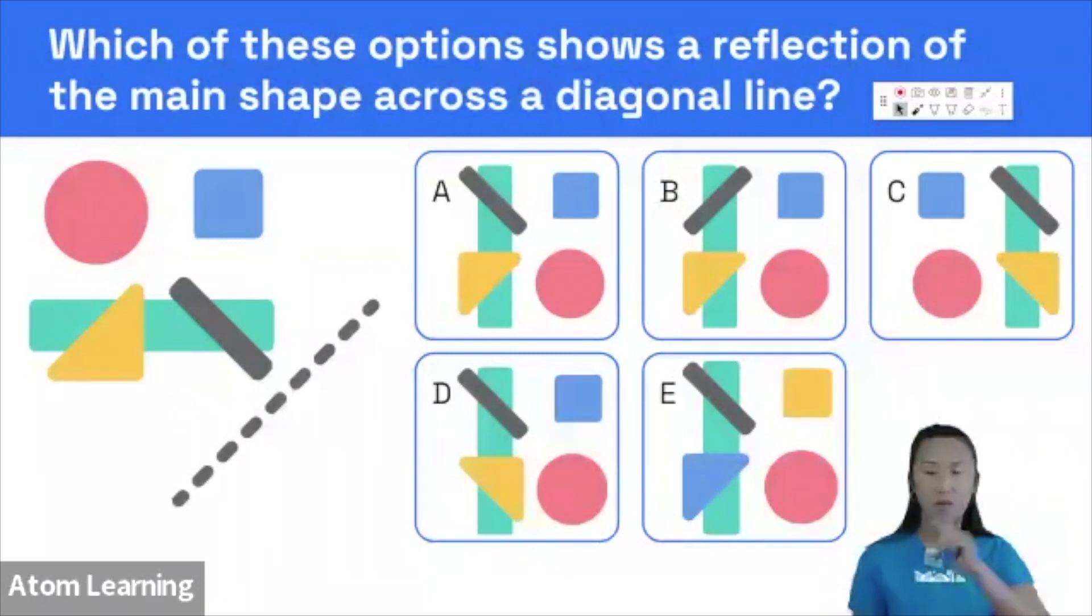Now let's identify the elements of the main shape. There are five main shapes. One of them is a circle. We've got a long rectangle with a triangle and a line placed on top of it, and then a blue square in the top corner.